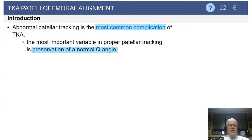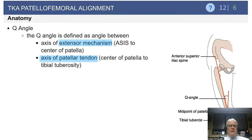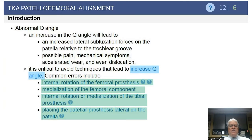Abnormal patellar tracking is a common complication of total knee arthroplasty. The most important variable in assuring proper patellar tracking is preservation of the Q angle. This is defined as the angle created from the axis of the extensor mechanism — anterior superior iliac spine to the center of the patella — versus the axis of the patellar tendon, center of the patella to the tibial tuberosity. Increasing the Q angle increases the lateral force vector and increases the risk of lateral patellar subluxation.